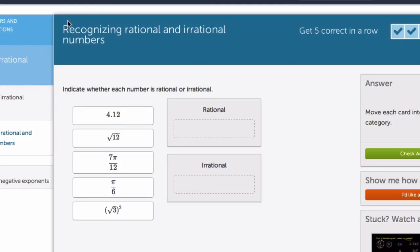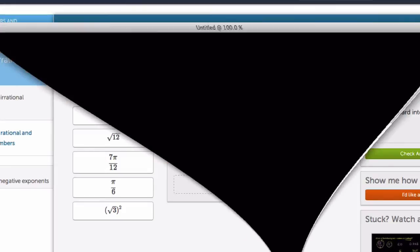In this video, we're looking at the Khan Academy module on recognizing rational and irrational numbers. We're going over it in the context of just recognizing some simple versions of rational and irrational numbers.